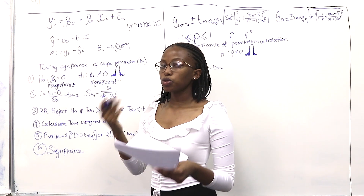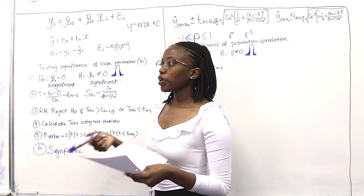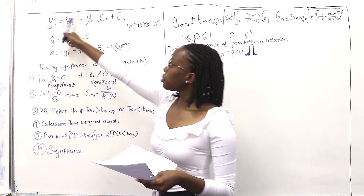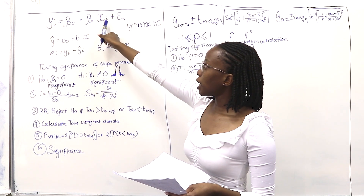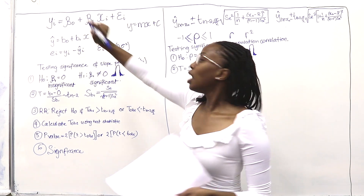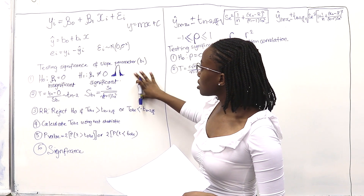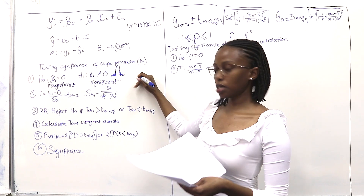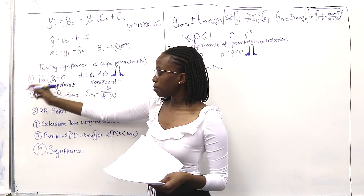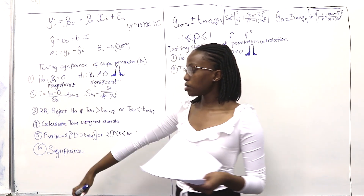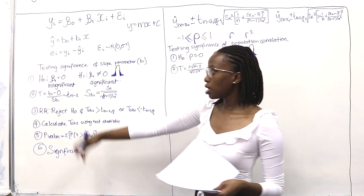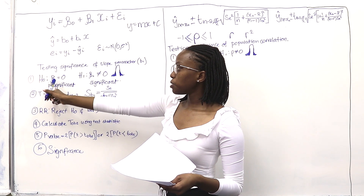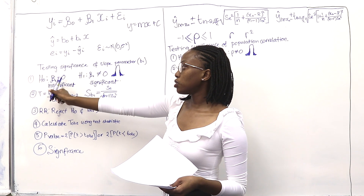So let's say our beta 1 was 2. For every increase of 2, our units of y will be accounted for by one unit of x. When we test the significance, we use hypothesis testing. In the first step, our H0 is going to be beta 1 equals 0.